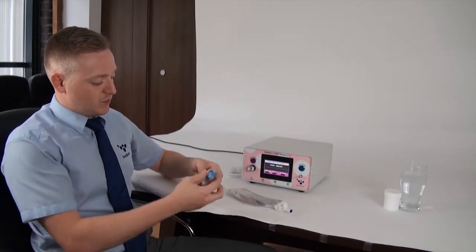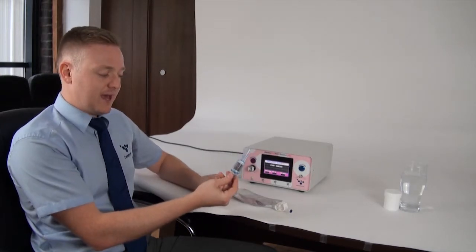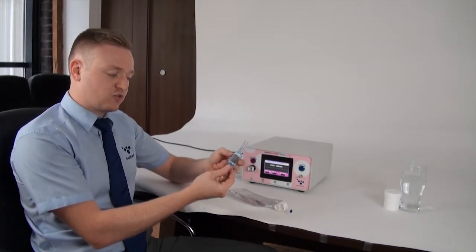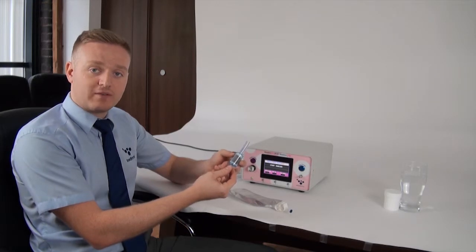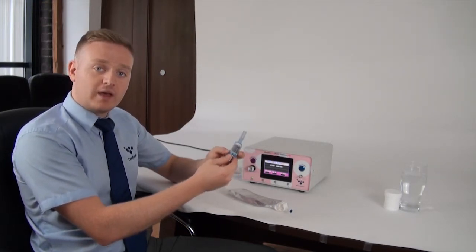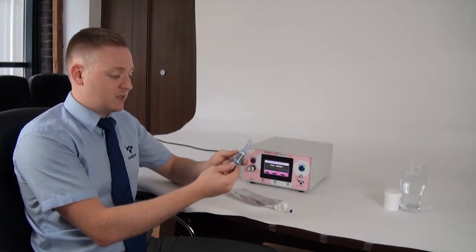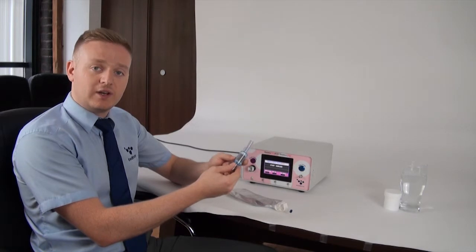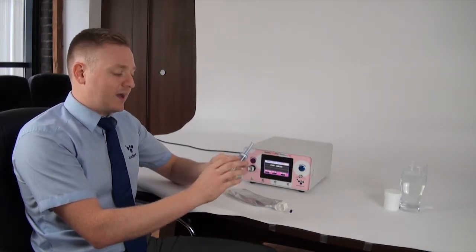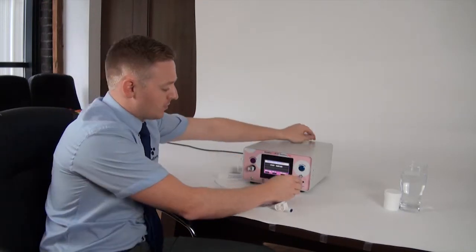For the breath bag test what you need is the filter. The filter goes onto the front of the machine and has little drying balls in there to take any moisture out of the breath. They start off orange and then when they're spent or used up they will go dark green, so when they go green you need to change the filter over. Approximately 150 tests until they go green. So we'll pop that onto the front of the machine there.